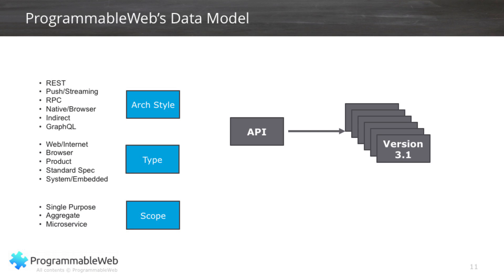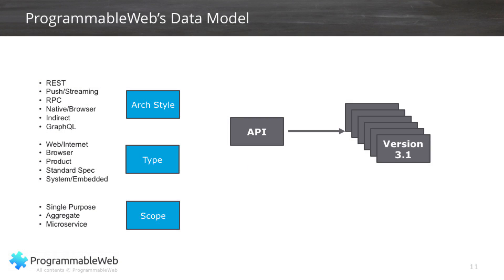We also track the scope of the API — does it cover just one piece of functionality, multiple pieces of functionality? Is it a microservice API? This is a new part of our data model. And finally, API versions. Versioning APIs by itself is an art. Most APIs have multiple versions out there on the web, and sometimes those versions are completely deactivated. We track all of that information on Programmable Web so developers can look for the history of APIs and figure out which version — or a beta version that's coming — they want to try out with their next application.